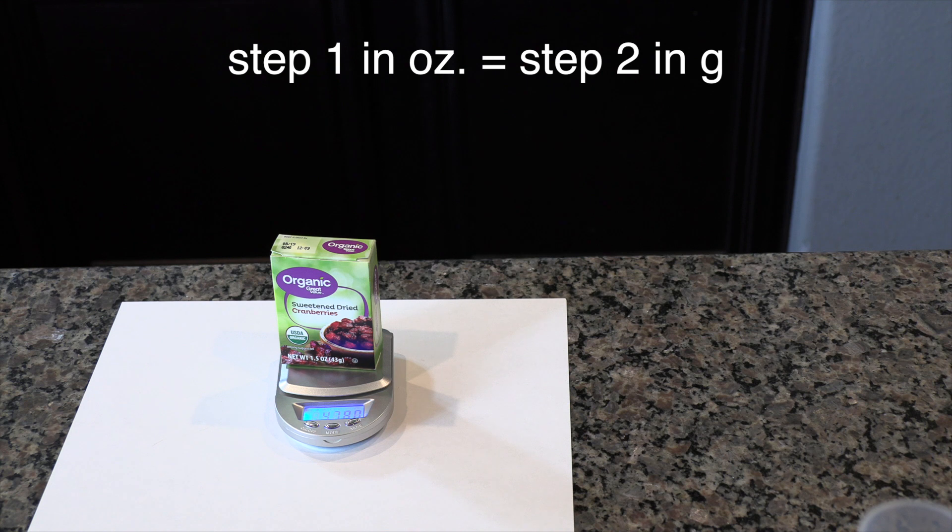Set the results of step one and step two equal to one another and calculate the number of grams in one ounce.